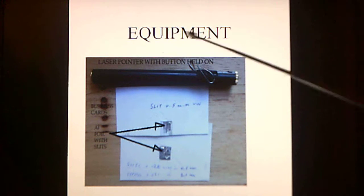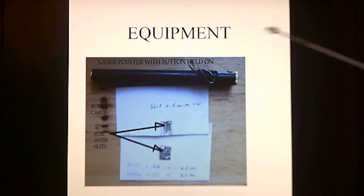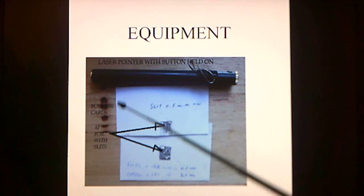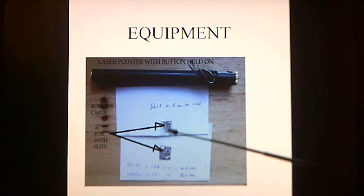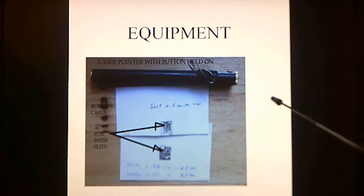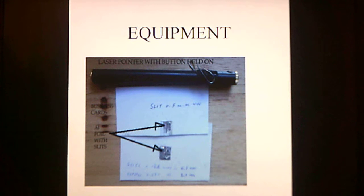The equipment for the experiment consists of a laser pointer with a paper clip holding the button down so the laser light stays on. Business cards were taken, a hole cut in them, and a piece of aluminum foil placed over the hole. A slit was then cut in the aluminum foil. It is important for the experiment that the mask be as thin as possible, and that there be no index-of-refraction concerns.